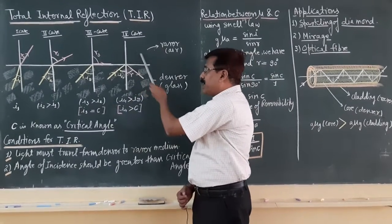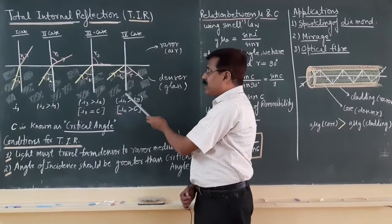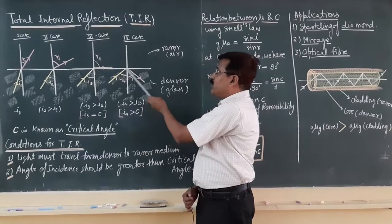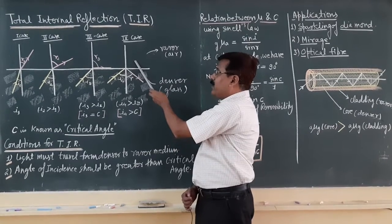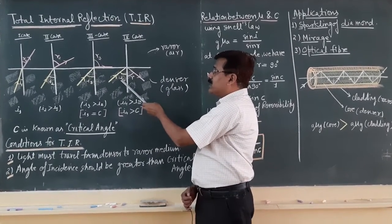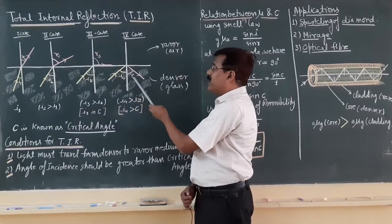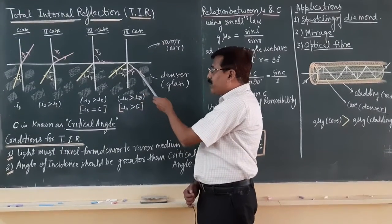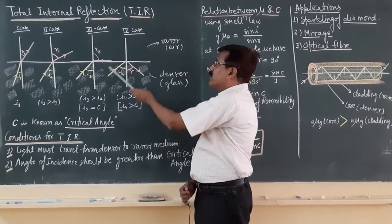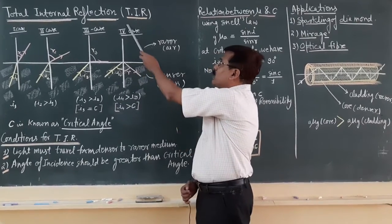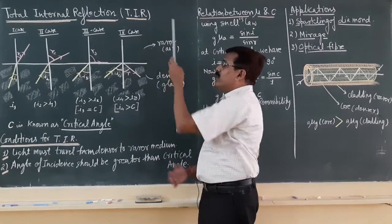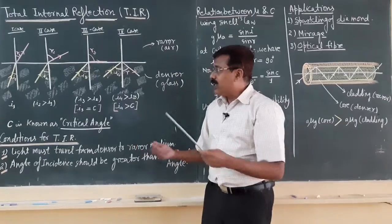This fourth case — when light travels from denser to rarer medium provided the angle of incidence is greater than the critical angle — the light ray reflects back. This phenomenon is termed as total internal reflection.